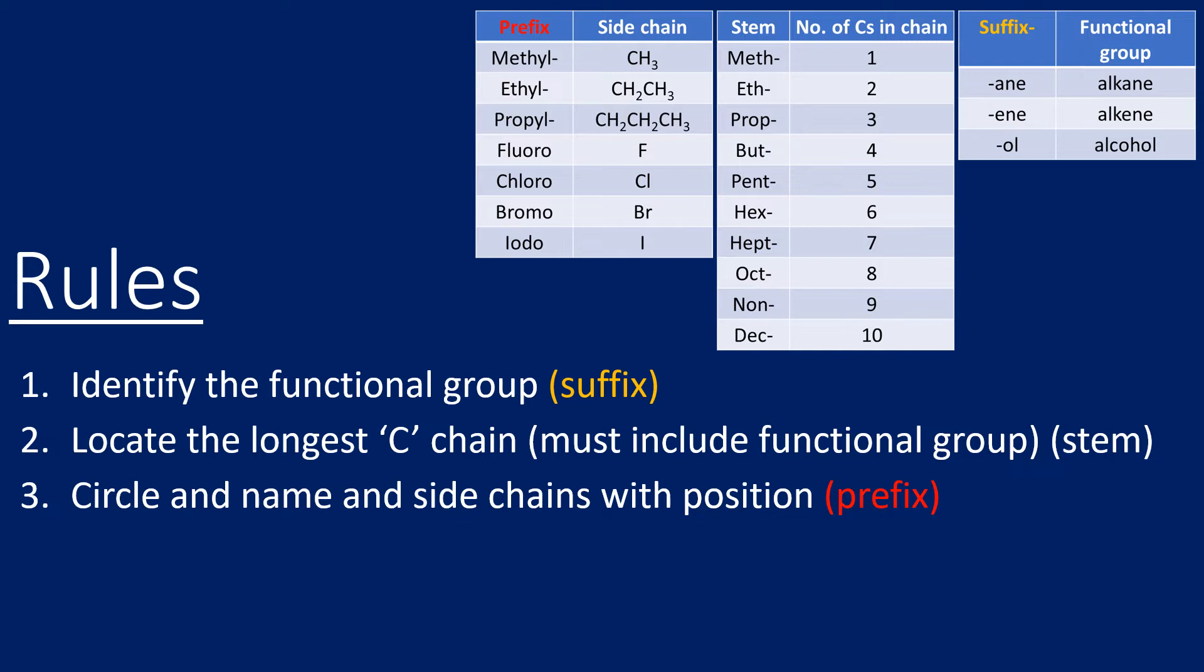Then we must identify the longest carbon chain, but that longest carbon chain must include the functional group, and that becomes the stem part of our name. We don't always have a prefix, but if you have side chains or a halogen, then we do require a prefix, and we identify the position of that prefix.